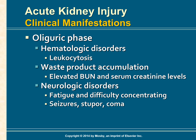Waste product accumulation is another clinical manifestation. The kidneys are the primary excretory organs for urea, an end product of protein metabolism, and creatinine, an end product of endogenous muscle metabolism. BUN and creatinine levels are elevated in kidney failure. Neurological changes can also occur as nitrogenous waste products accumulate in the brain and nervous tissue, ranging from fatigue and difficulty concentrating to seizures, stupor, and coma.